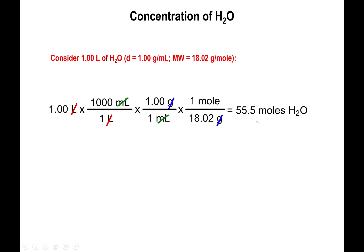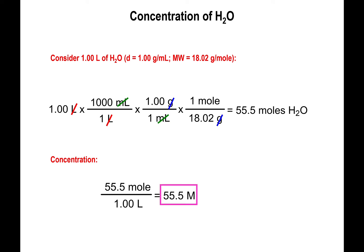Doing the calculation, you find that one liter of water contains 55.5 moles of water. Because 55.5 moles are present in one liter, the concentration of pure water is 55.5 molar.